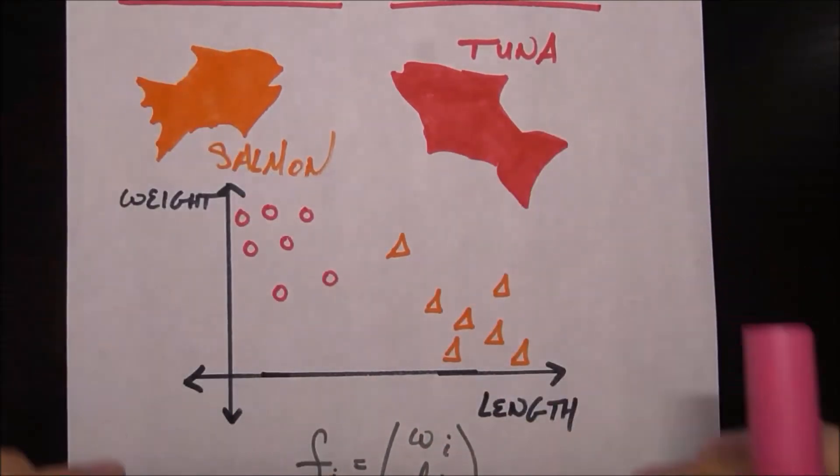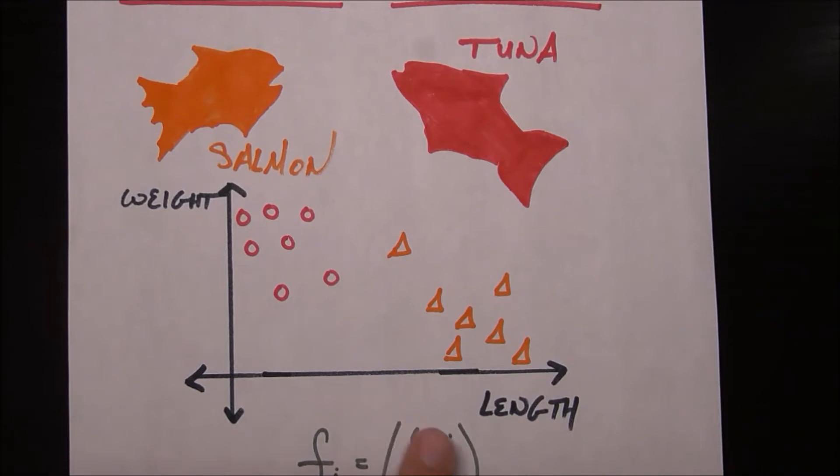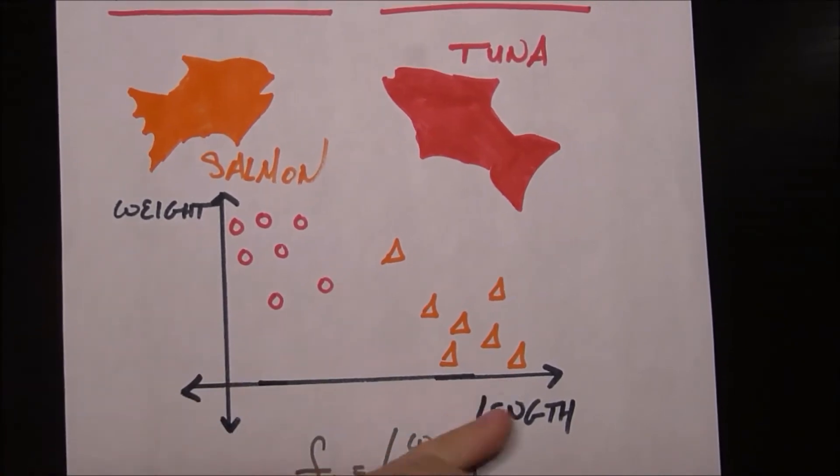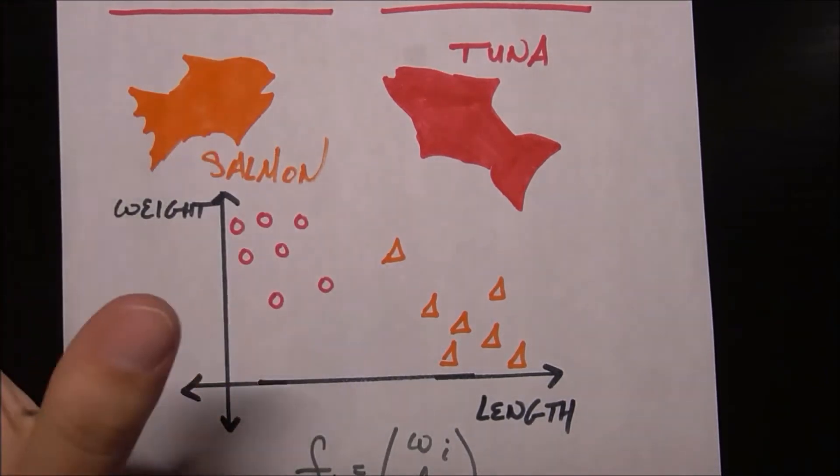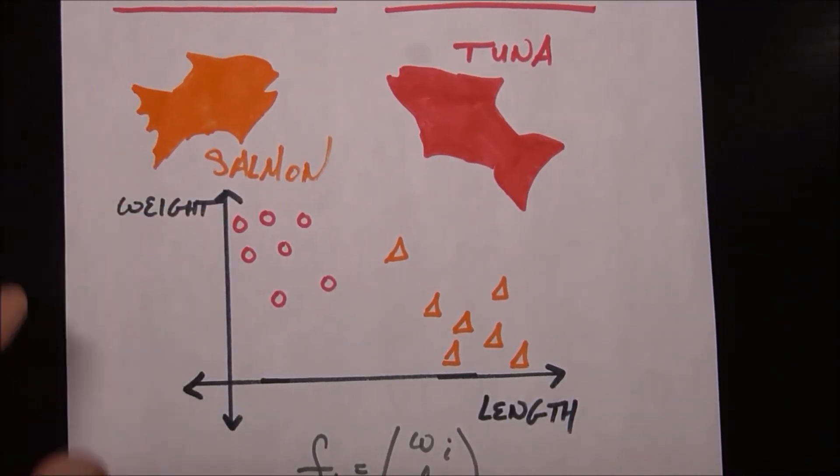We already see some natural clustering. It seems like the tunas have a low length and a high weight and the salmon have a high length and a low weight. Of course there's some that are kind of on the border, but that's the general trend here.